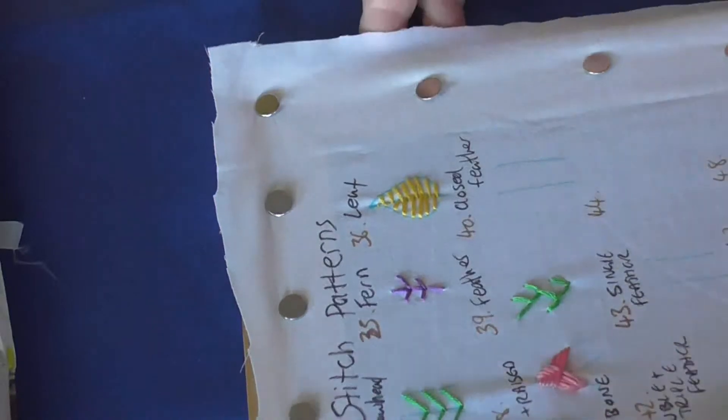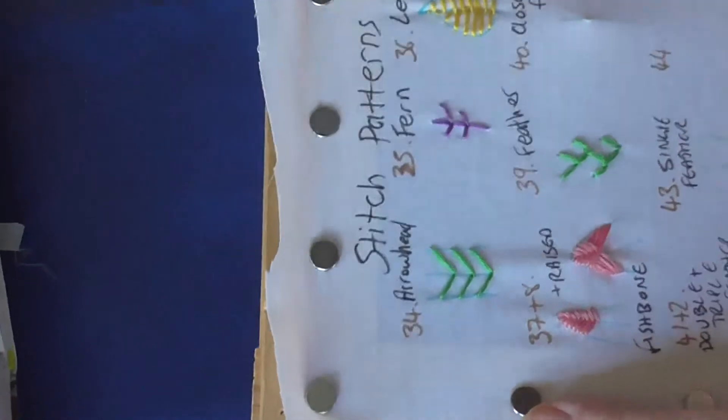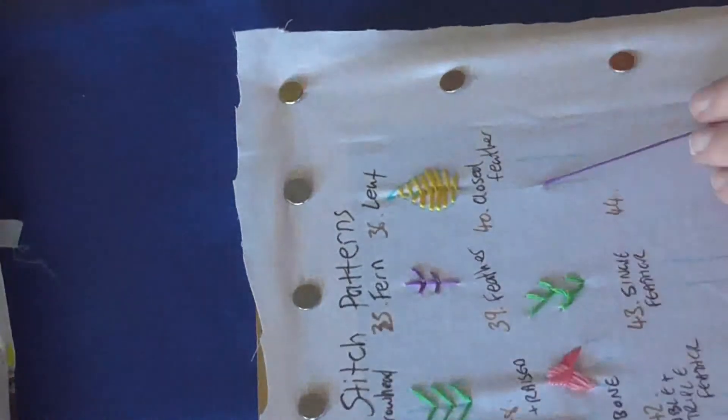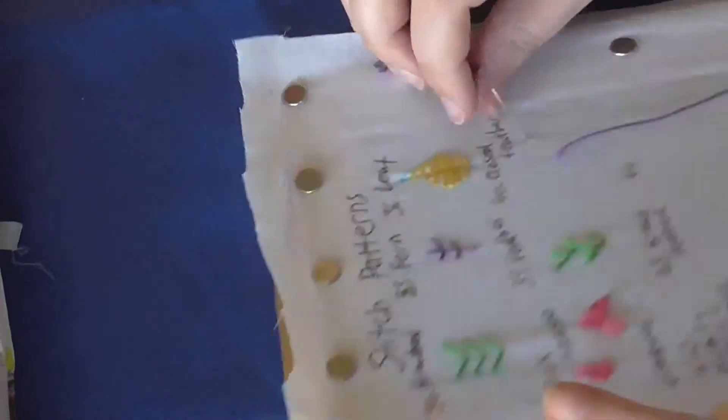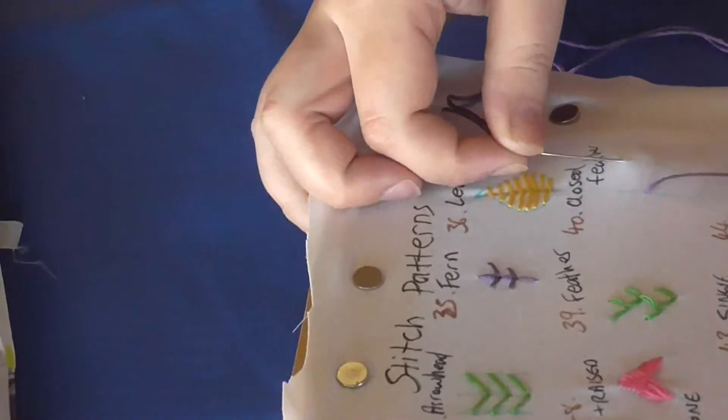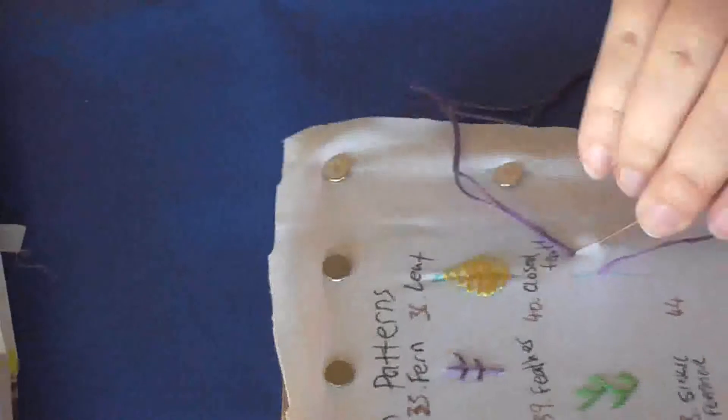The closed feather stitch is again another one that's good for borders and bands. It is pretty much a loop again. So you start on your left hand side and then come up to the right and then stitch through and catch hold of the stitch.